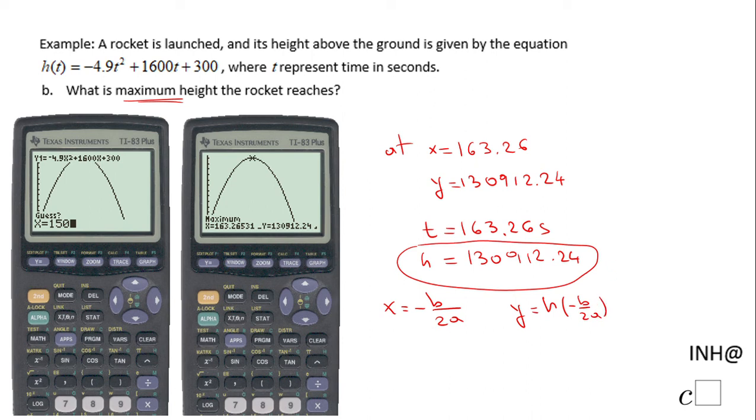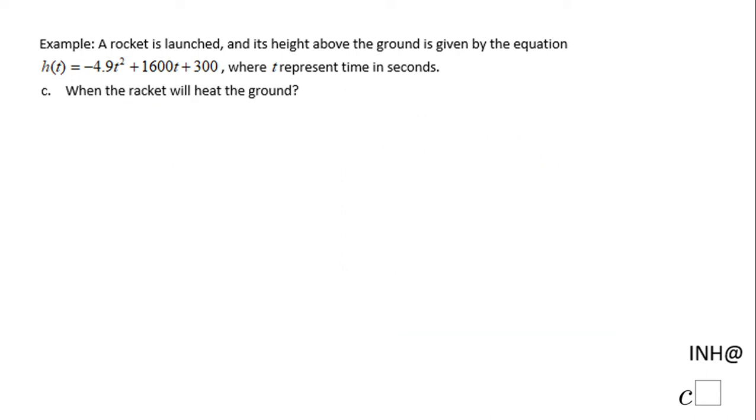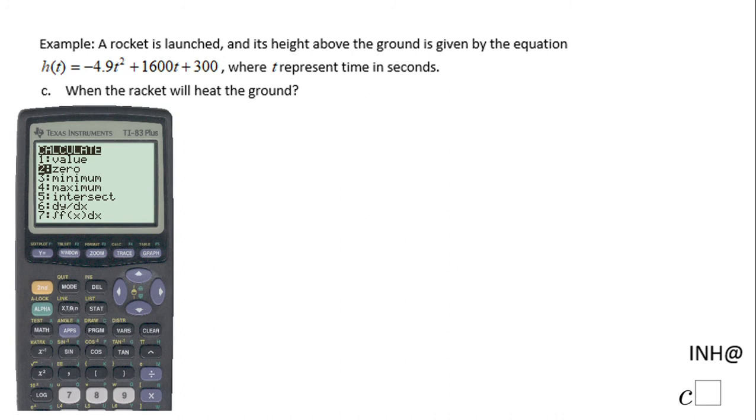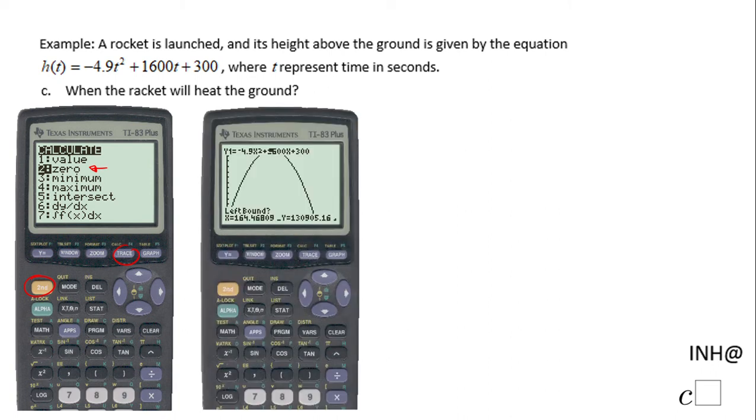Then we can move to part C where we are asked to find when the rocket will hit the ground. Again I'm gonna use technology here and I'm gonna click second calc. If you remember this is the menu, but now I'm gonna use this choice which says zero because I want to find when the height is zero, the zero of the function.